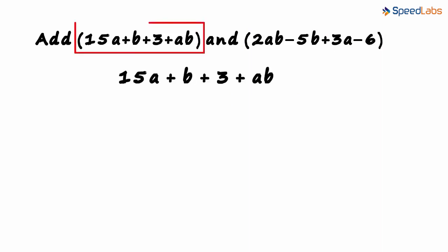Let's write the first one as is. We write the second expression here underneath this one. But there is a way in which we write it. We write the like terms one under the other. Look at the first term for instance. 15a.